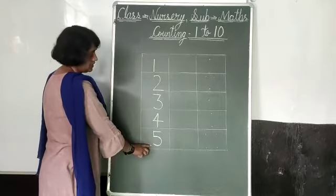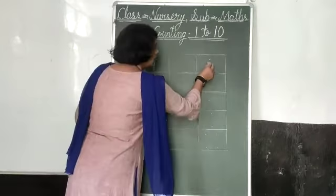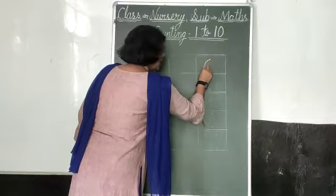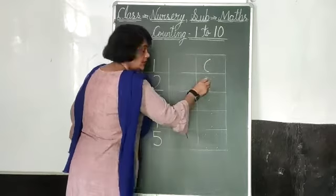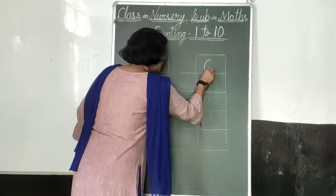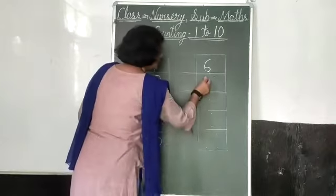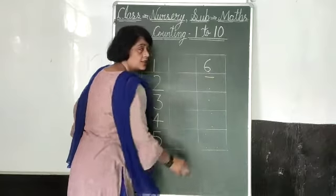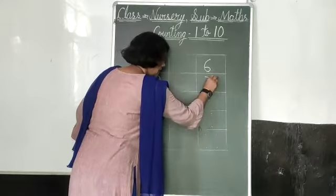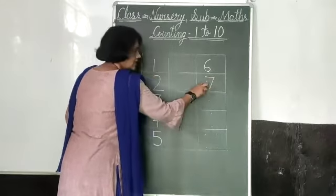5. Half circle. Then join small half circle. 6. Sleeping line. Then join slanting line. 7.